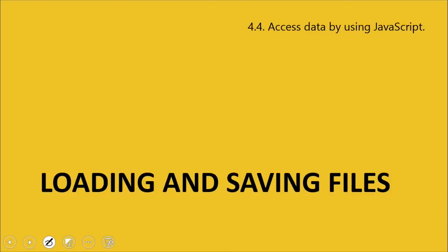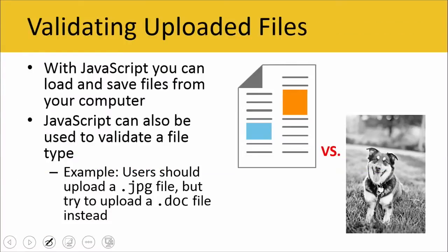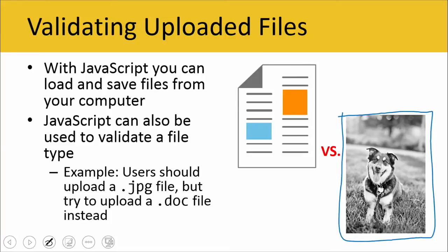Next we'll talk about loading and saving files — how do we handle data locally? JavaScript allows us to load and save files from our local computer. Sometimes you're going to ask a user to upload a specific type of file, like maybe a picture. What might happen is that a user might try to upload a .doc file instead — we don't want that to happen. We can use JavaScript to tell our users, hey, you're uploading the wrong file — you should upload a JPEG instead.